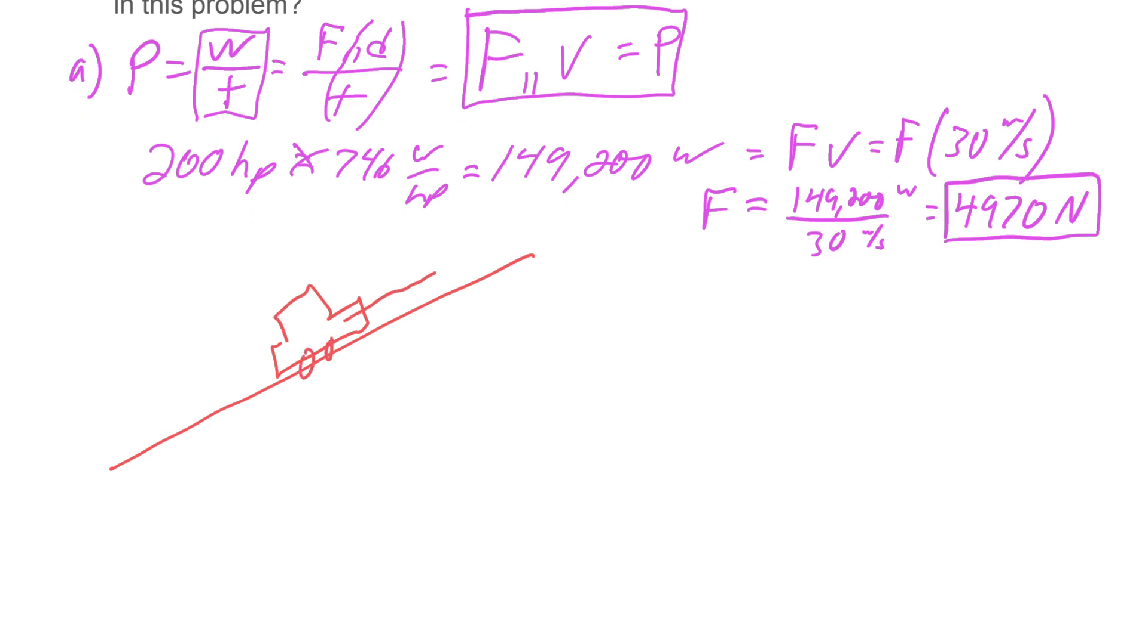There's going to be some air resistance coming back down, and then there's also the component of gravity coming down the hill. It's at an angle, so part of gravity is pulling it down. It's not all of gravity. Based on the angle, this is going to be mg sine theta, that's the component coming down.